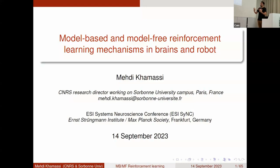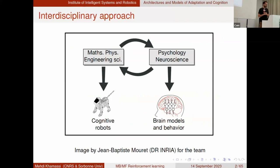I'm going to talk about a distinction from a computational point of view, which I hope can be useful for neuroscience research, between model-based and model-free reinforcement learning mechanisms in brains and robots. In our group we really try to have an interdisciplinary approach, using formalisms and tools from maths, physics, and engineering to come up with new computational models for psychology and neuroscience, and also taking inspiration from the brain to test ideas on robots.